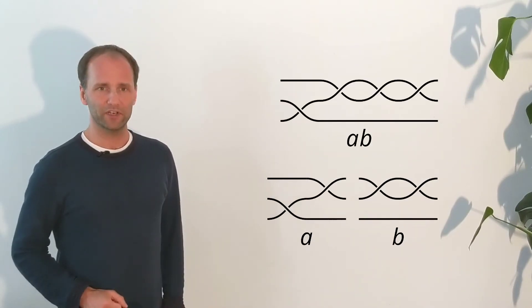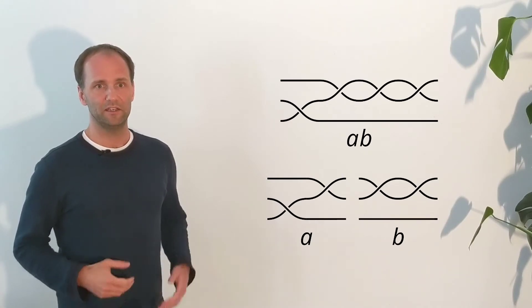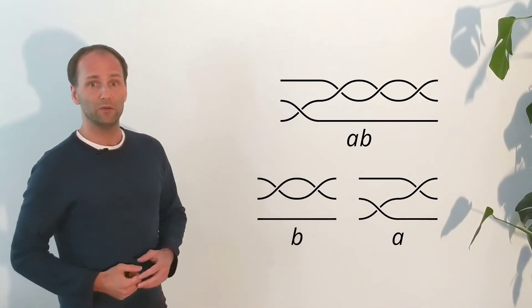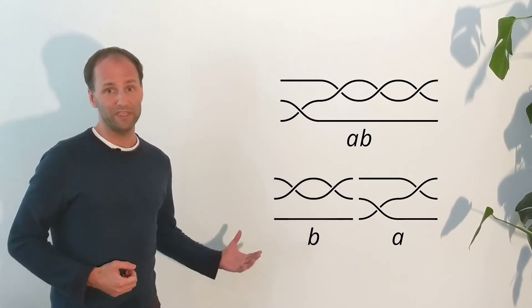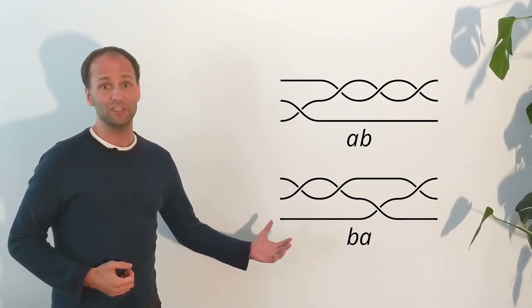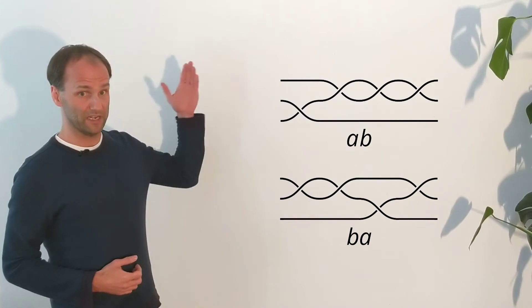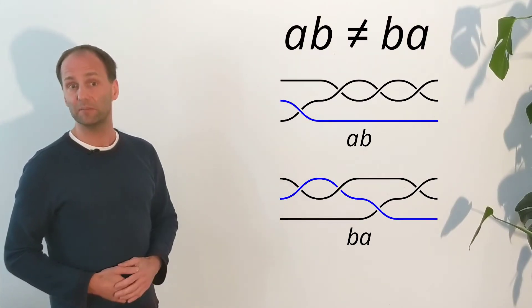For the product of braids, the order of the factors matters. Namely, when we exchange A and B, we see that the product of B and A is usually different from the product of A and B, as in this example.